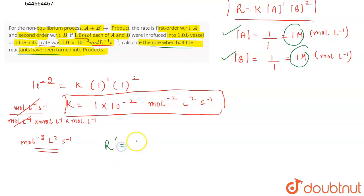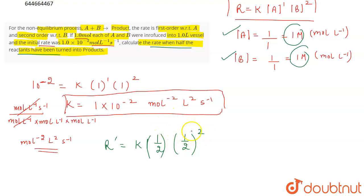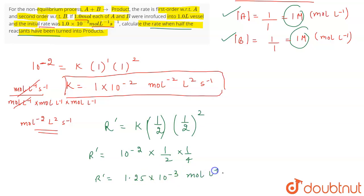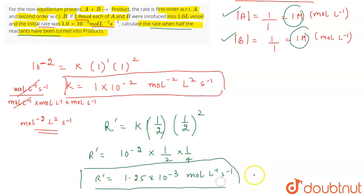The new rate R dash will be equal to k into the concentration of A, which is 1 by 2, because initially it was 1 and half is used, so half which is 1 by 2 is left. And for B, it will be 1 by 2 squared, because it is second order with respect to B. We have the value of the rate constant, which is 10 to the power minus 2 into 1 by 2 into 1 by 4. So the new rate will be 1.25 into 10 to the power minus 3 mole per liter per second.